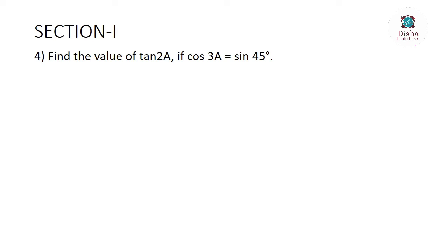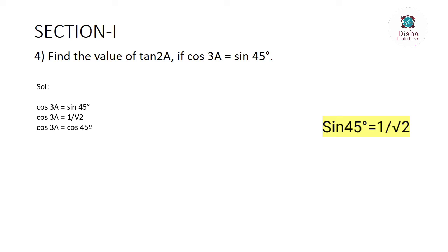Find the value of tan 2a if cos 3a = sin 45°. We have to find tan 2a, given that cos 3a = sin 45°. So cos 3a = 1/√2, since sin 45° = 1/√2. We know that sin 45° and cos 45° are equal, both equaling 1/√2, so cos 3a = cos 45°.